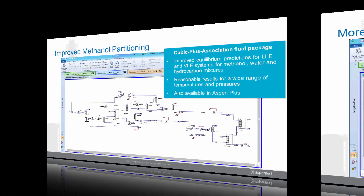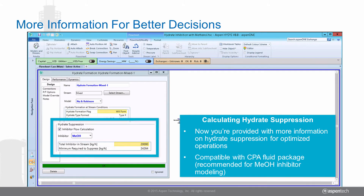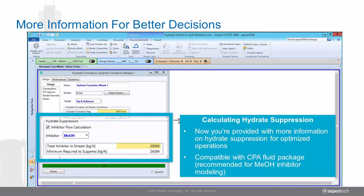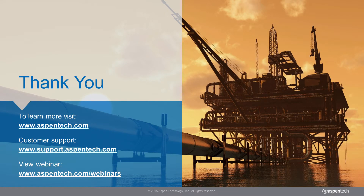CPA is compatible with our newly enhanced Hydroformation Utility, which now computes the amount of inhibitor needed for hydrate suppression, providing you with more information for better decision making. Join the many process engineering professionals who are using industry-leading software from Aspen Tech to drive plant profitability.